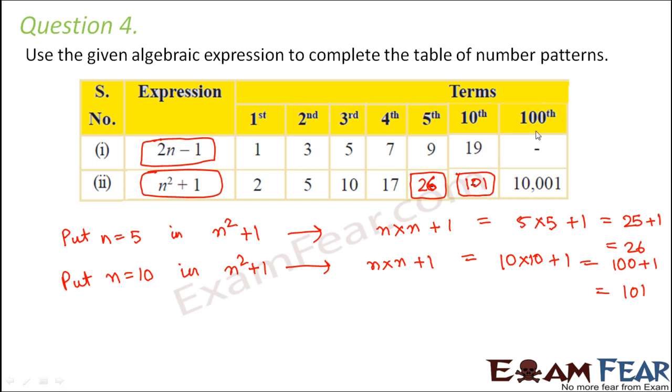Now let us look at the third blank which is the 100th number for this particular expression. So in this case we will put n is equal to 100 in the expression 2n minus 1. So this would be 2 into n minus 1 which is 2 into 100 minus 1. So 200 minus 1 that is equal to 199. So here this would be 199.